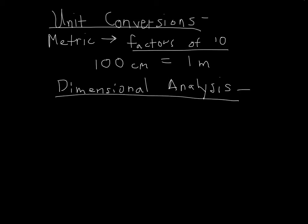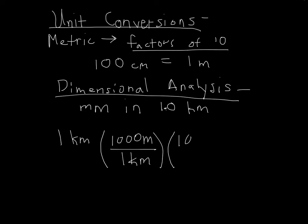Let's see an example of dimensional analysis. I want to convert one kilometer into millimeters. I can use a process called the factor label process. I have one kilometer. Maybe I don't know how many kilometers are in a millimeter, but I do know how many meters are in a kilometer. I know there are a thousand meters, one thousand meters in one kilometer.